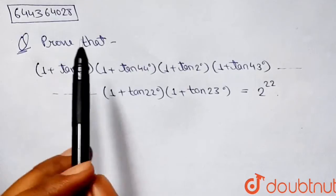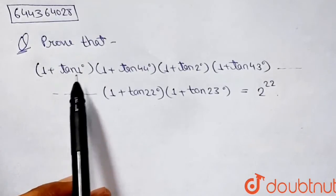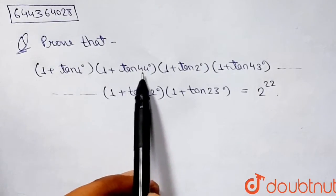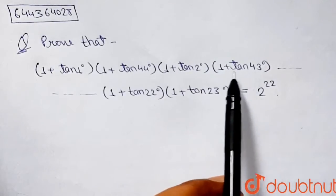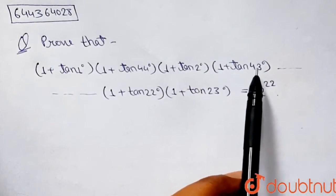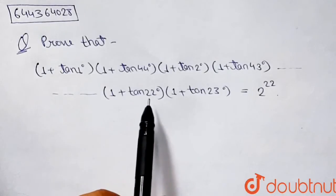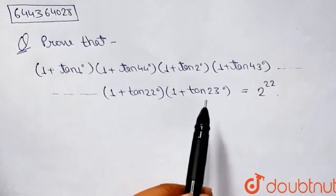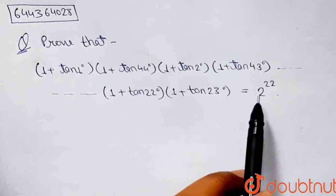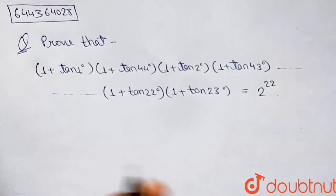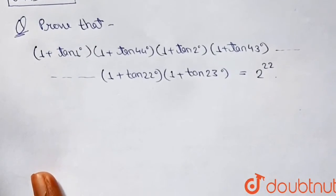It says: prove that (1 + tan 1°)(1 + tan 44°) × (1 + tan 2°)(1 + tan 43°), up to (1 + tan 22°)(1 + tan 23°), equals 2 to the power 22. So let's start.